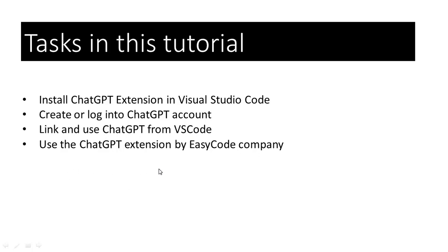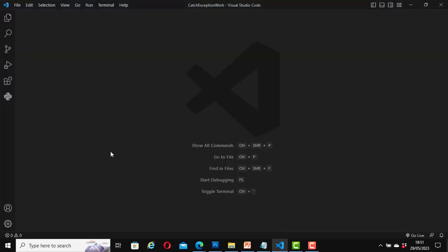We will use the ChatGPT extension by Easy Code Company. There are many ChatGPT extensions we can use in Visual Studio Code, however we will specifically be looking at the ChatGPT extension developed by the Easy Code Company. Many ChatGPT plugins are available in Visual Studio Code — some are active with good reviews and high usage, but some are deprecated and no longer supported or maintained regularly.